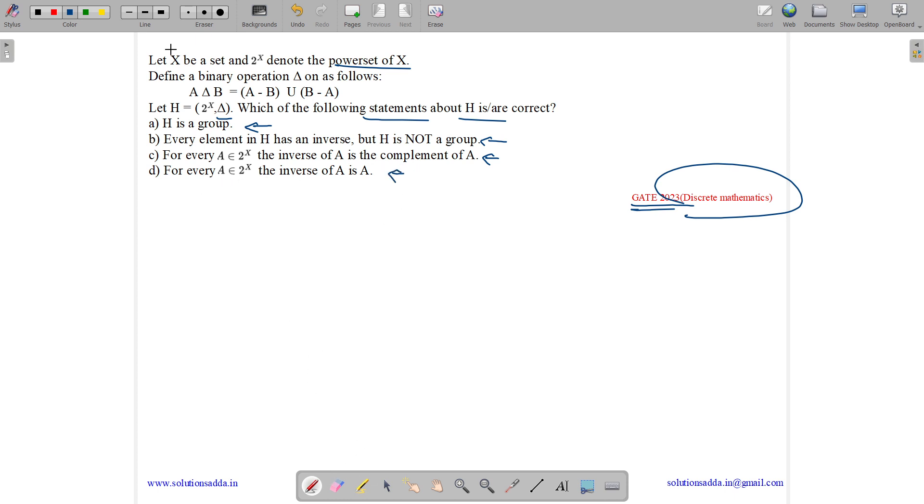So let us analyze the operation first. What is the operation? A delta B equals to A minus B union B minus A. Let us analyze this by using the Venn diagram.